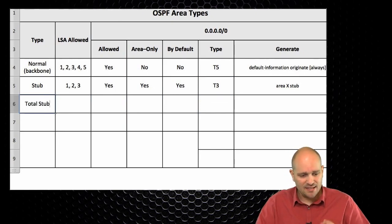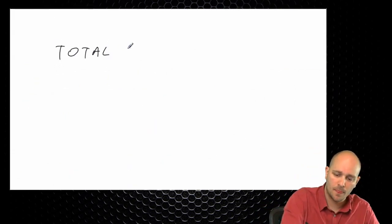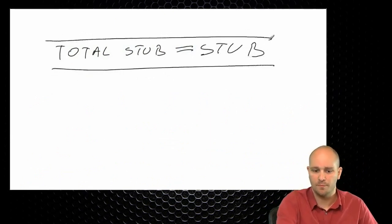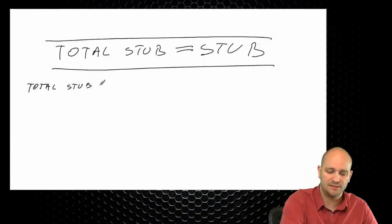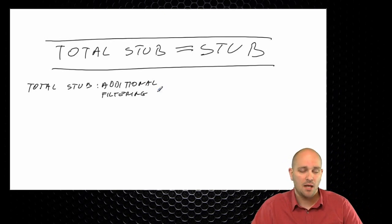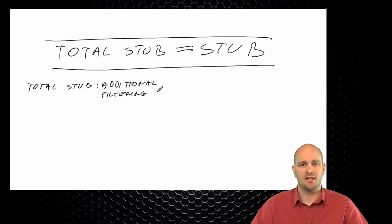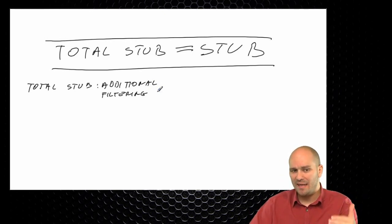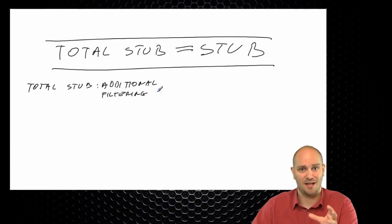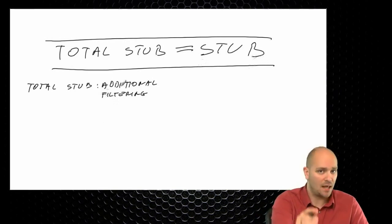The next area type is total stub. An important point: total stub is the same area type as stub — there is no difference between them. Total stub only implements additional filtering. If a lab task says 'create area 155 and do not make it stub,' you cannot make it total stub either. Total stub is a stub area with additional filtering, so it would still violate that instruction and you would fail the task.